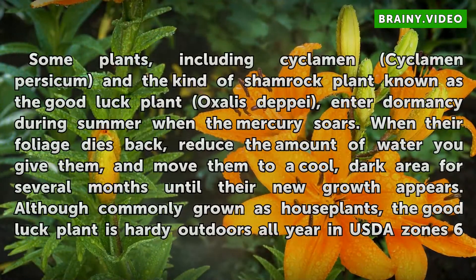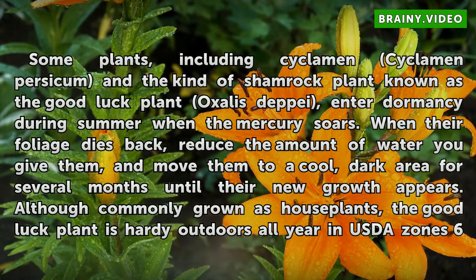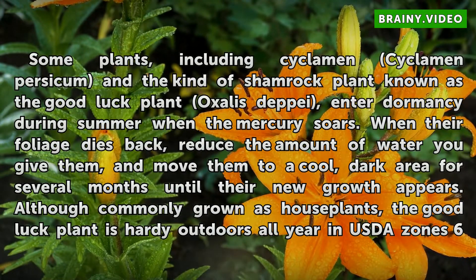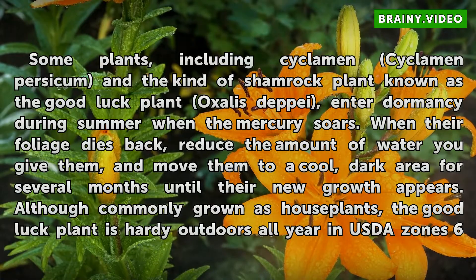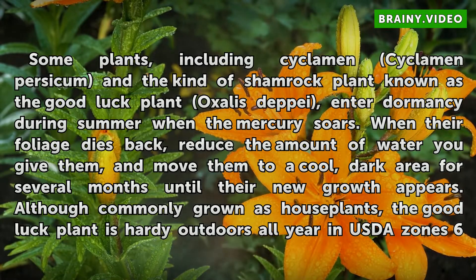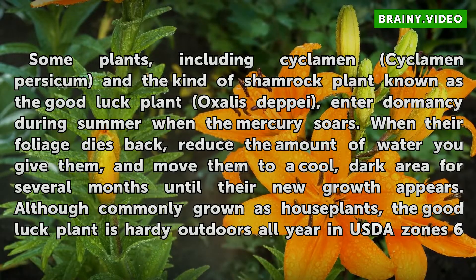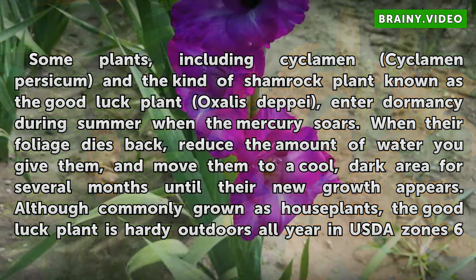Some plants, including Cyclamen persicum and the kind of shamrock plant known as the Good Luck plant Oxalis, enter dormancy during summer when the mercury soars. When their foliage dies back, reduce the amount of water you give them, and move them to a cool, dark area for several months until their new growth appears.